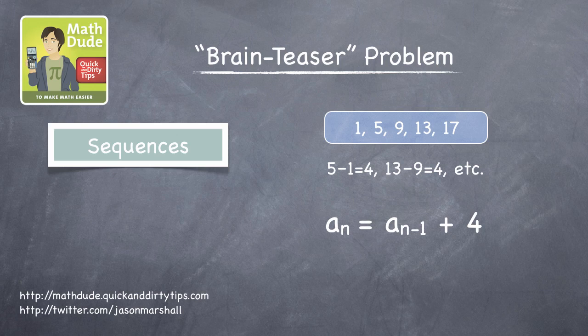So, to find the second element, just plug in n equals 2. a sub 2 equals a sub 1 plus 4, which is 1 plus 4, it's 5. It works.